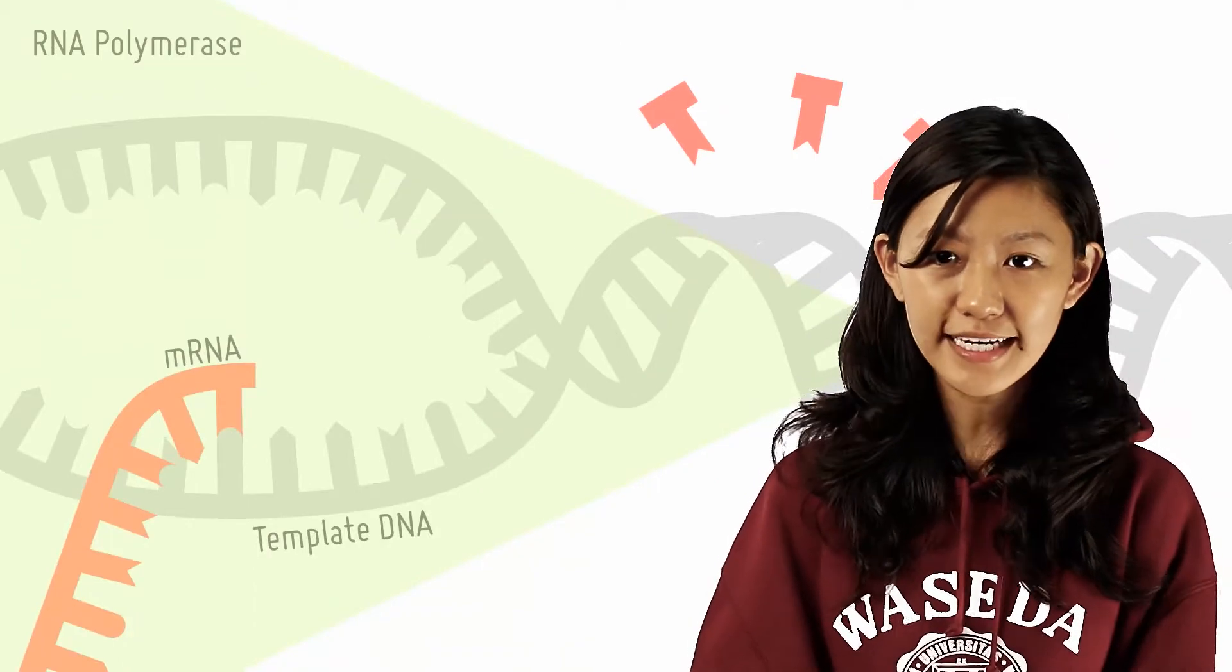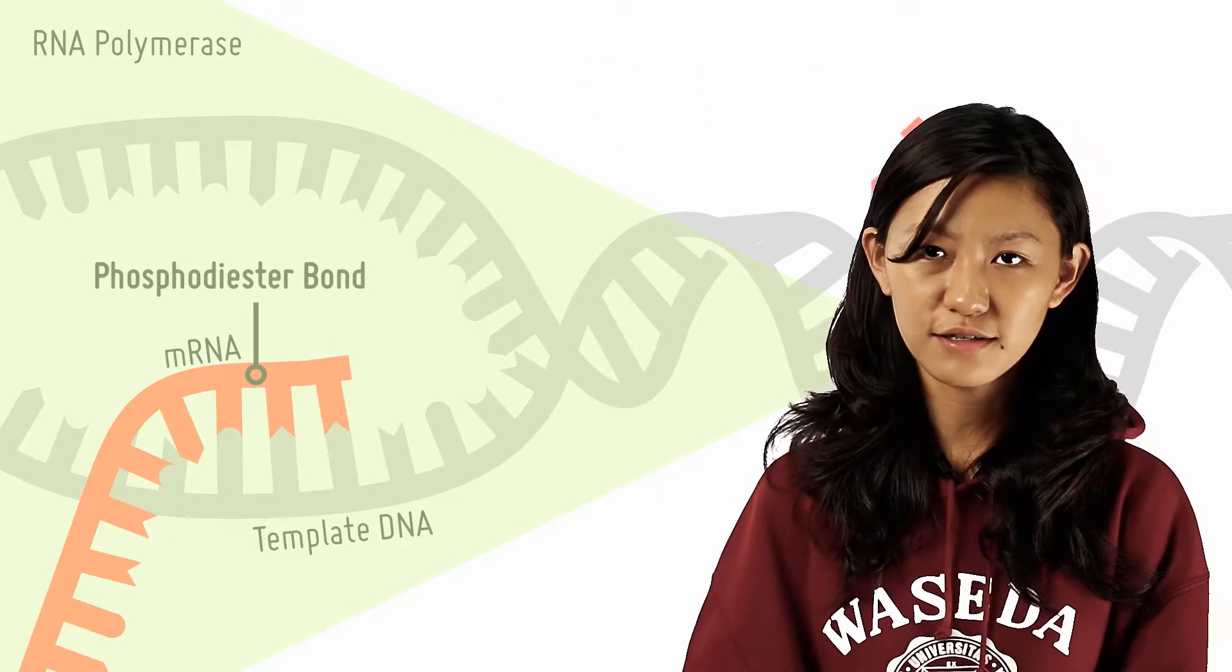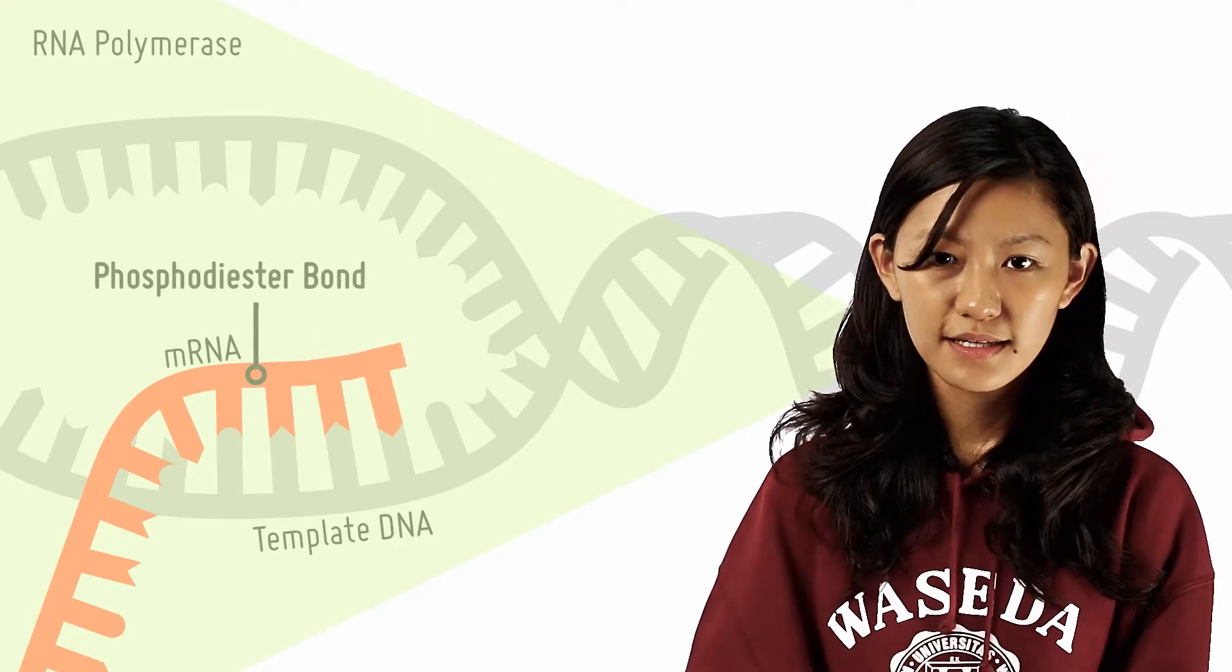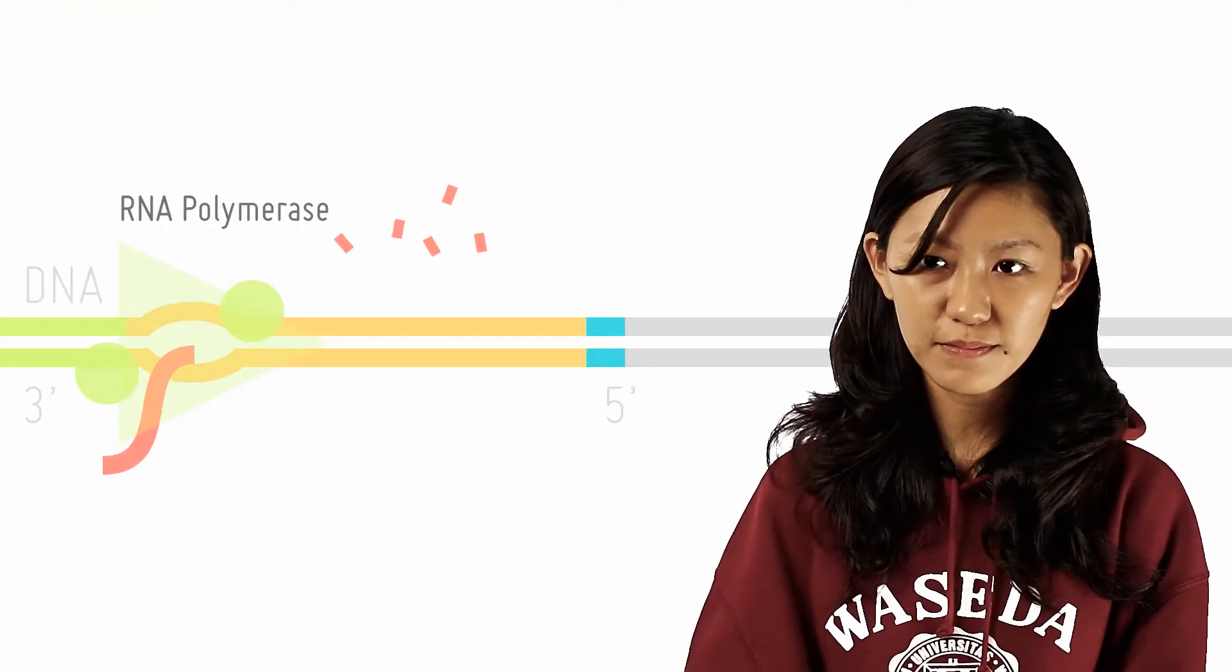RNA polymerase will then catalyze the joining of adjacent ribonucleotides through the formation of covalent phosphodiester bonds. The mRNA is synthesized and elongated in the 5' to 3' direction.